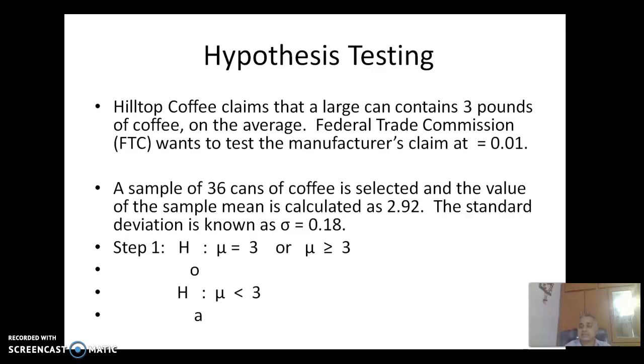So this is the problem. Hilltop Coffee claims that a large can contains 3 pounds of coffee. So 3 pounds is the mean of the total population. Federal Trade Commission wants to test the manufacturer's claim at 0.01, so the level of significance is 0.01. A sample of 36 cans of coffee is selected. The sample size is 36. The value of sample mean is calculated as 2.92, so sample mean x bar is 2.92. The standard deviation sigma is 0.18.